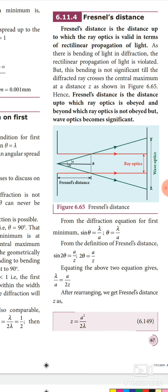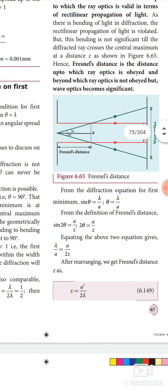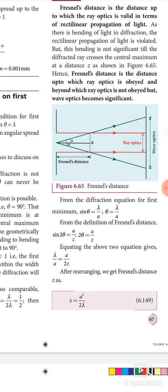Wave optics is otherwise known as diffraction. Diffraction means bending of light rays or bending of the light wave. In ray optics, we see reflection and refraction. But in wave optics, we see interference and diffraction — what is interference and what is diffraction.